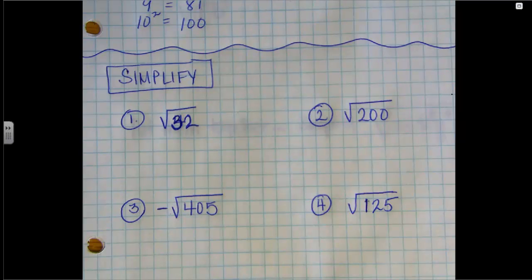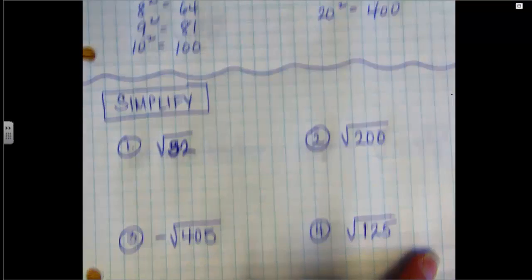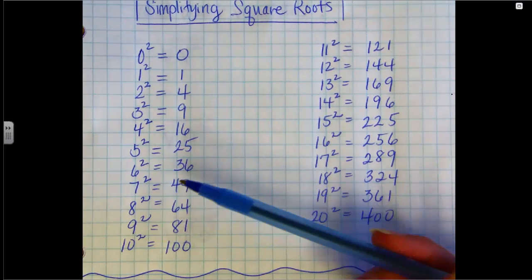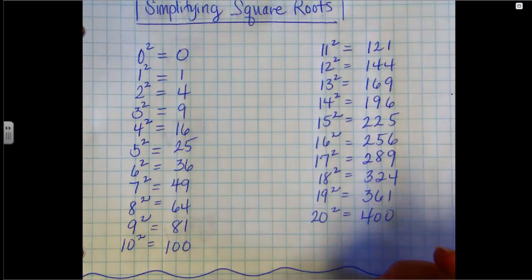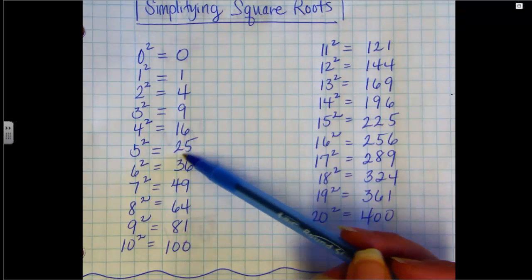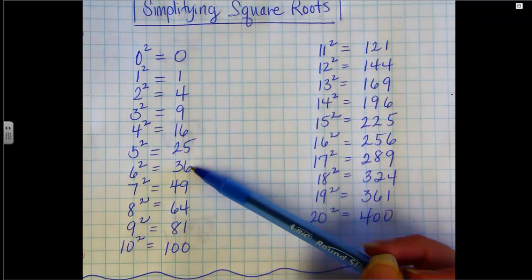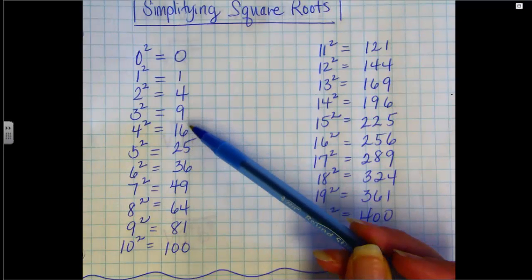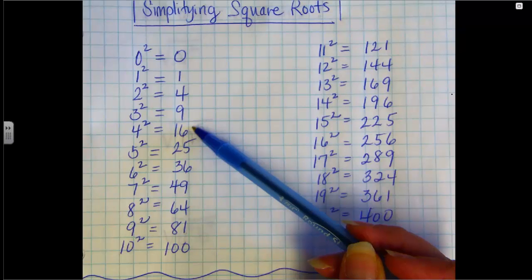So what you need to do is look at the number under the radical, or in this case, the square root. And for number 1, that's 32. So you take 32, and you go through your list of perfect squares and start trying to decide which number divides into it evenly. If I start with 36, that obviously does not. Neither does 25. When I move down to 16, 16 times 2 is 32. 16 divides into 32 nicely.